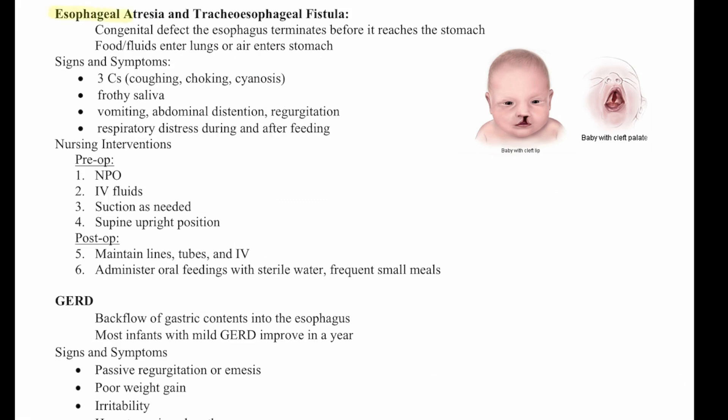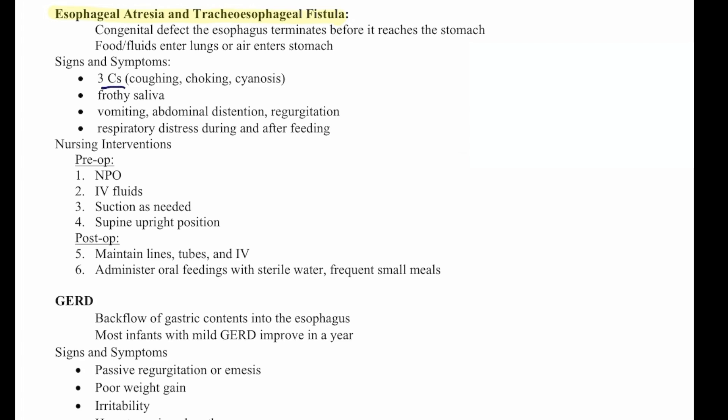Now we'll talk about esophageal atresia and tracheoesophageal fistula. These are congenital defects where the esophagus terminates before reaching the stomach, causing food and fluid to enter the lungs or air to enter the stomach. Signs and symptoms are the three Cs: coughing, choking, and cyanosis. They'll also have frothy saliva, vomiting, abdominal distension, regurgitation, and respiratory distress during and after feeding.